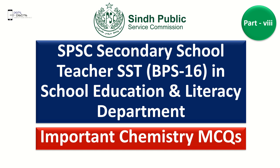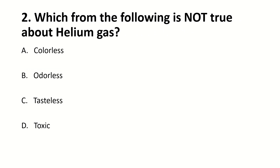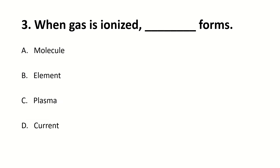All of the metallic elements are solid at room temperature except for dash. Right answer is B — mercury. Which from the following is not true about helium gas? Right answer is D — toxic. When gas is ionized, it forms dash. Right answer is C — plasma.